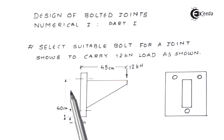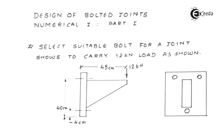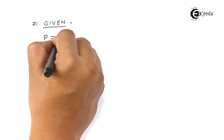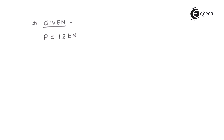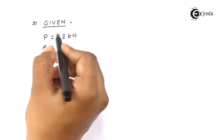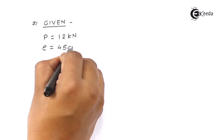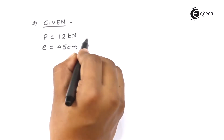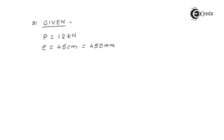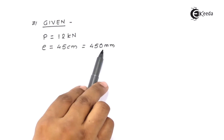If you see properly, there are only three number of bolts, and that is why we have to write down the given data. The first value — T — comes out to be 12 kilonewton. Second, eccentricity E is given as 45 centimeter, which comes out to be 450 millimeter. We generally follow the IS system and that is why we are converting all units into millimeter.